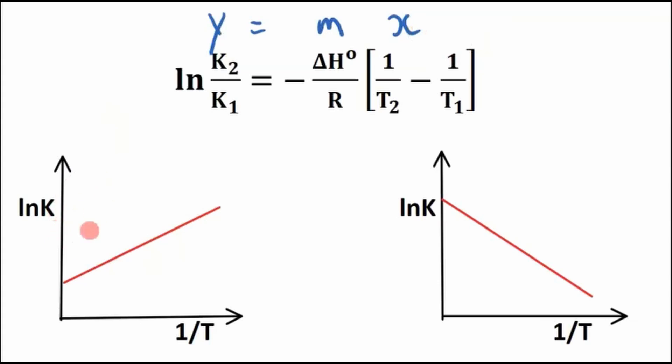So if we plot this, y is ln K, and 1 over T is like our x, then our slope is going to be this right here. So the slope is going to be slope equals negative delta H0 over R.